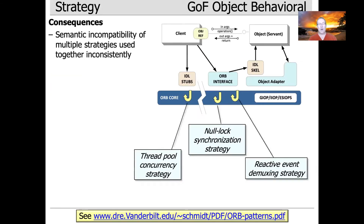Another downside is that if you have software that's heavily strategized and you start having multiple strategies, they may be used in inconsistent ways. When you combine them, something that works well in isolation may not work well when composed with other strategies. A good example of this is documented in the paper linked at the bottom of the page, which describes a middleware platform called the ACE Orb — heavily strategized, where pretty much anything that can vary can be strategized, including the concurrency model and the synchronization model.